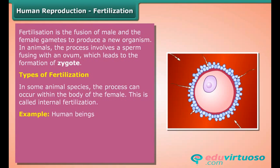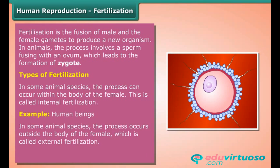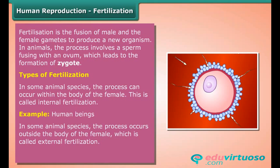An example of internal fertilization is human beings. In some animal species, the process occurs outside the body of the female, which is called external fertilization. Examples include frogs and fishes.